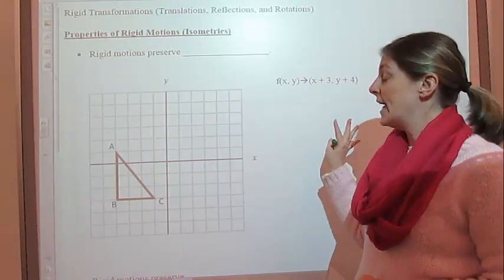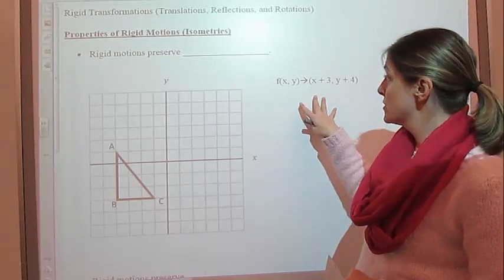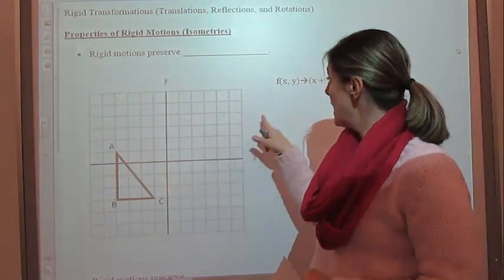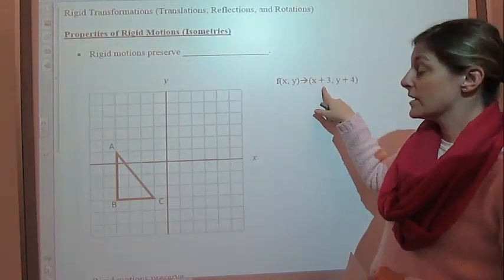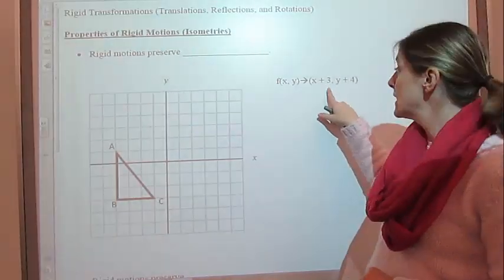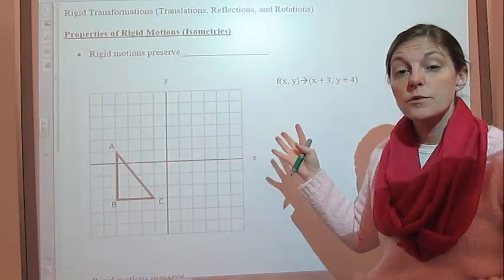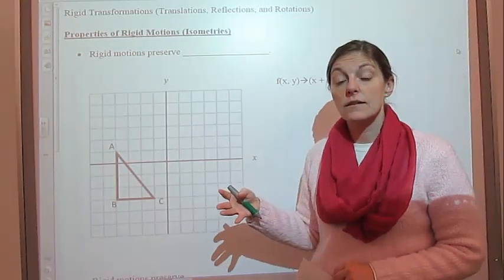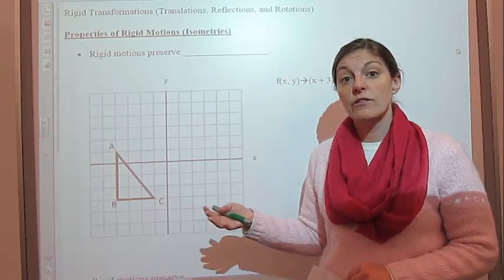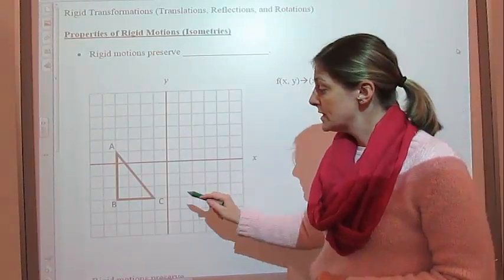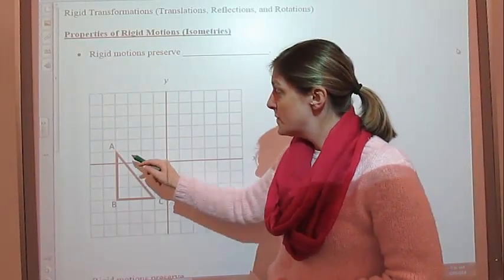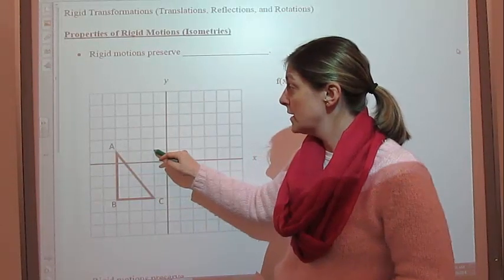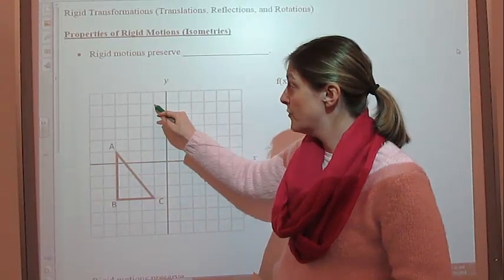So we're going to take a look at this function where f of x, y maps onto x plus 3, y plus 4. So basically we're adding 3 to all the x's and we're adding 4 to all of the y's. So that's going to take this point A and move it to the right 3 and up 4.